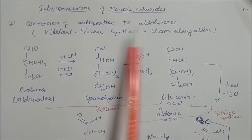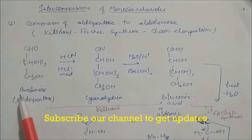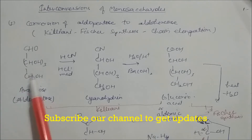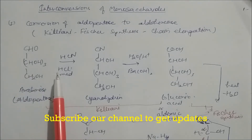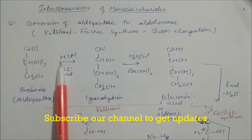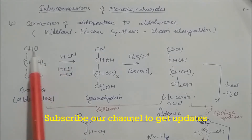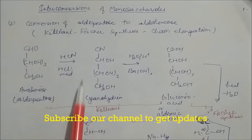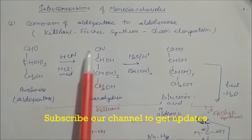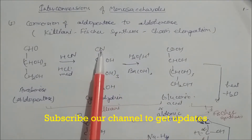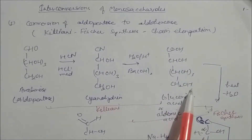An example of this is arabinose sugar: CHO, CHOH three times, and CH2OH — giving five carbons total. In the first step, a mild amount of HCN is added. The CN will attack the CHO carbonyl group to form a cyanohydrin, making the chain six carbons long. After cyanohydrin formation, acid hydrolysis converts the CN group into a carboxylic acid, giving glucaric acid.